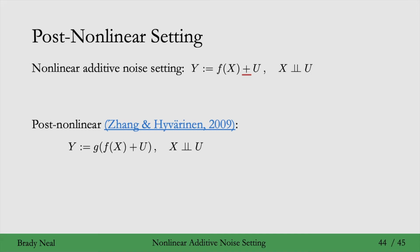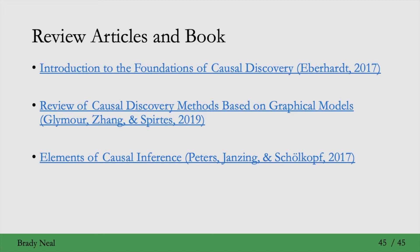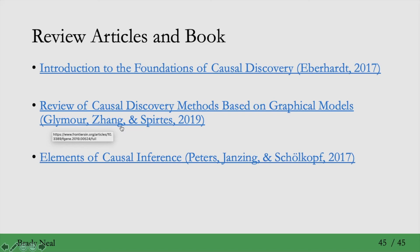If you want to learn even more about causal discovery from observational data, here are three nice sources. The first is a review article from Frederick Eberhardt. The second is another review article from some prominent authors — the P in the PC algorithm comes from Peter, and the C comes from Clark. This third author does a lot of research on this topic, and all three wrote a review paper together.